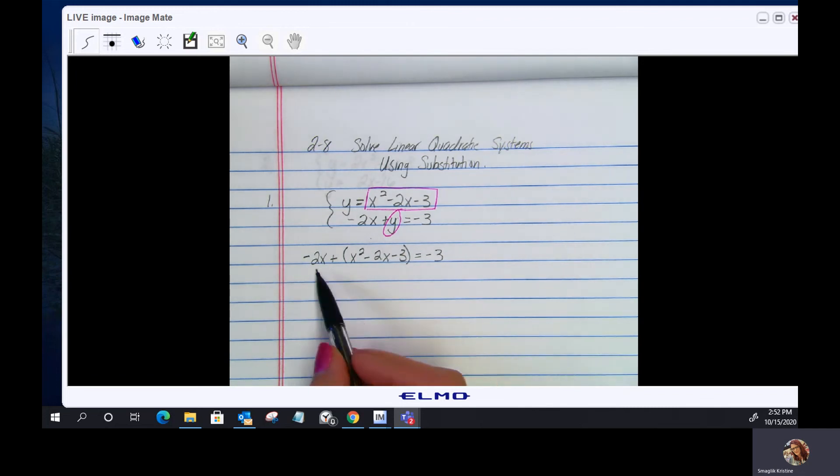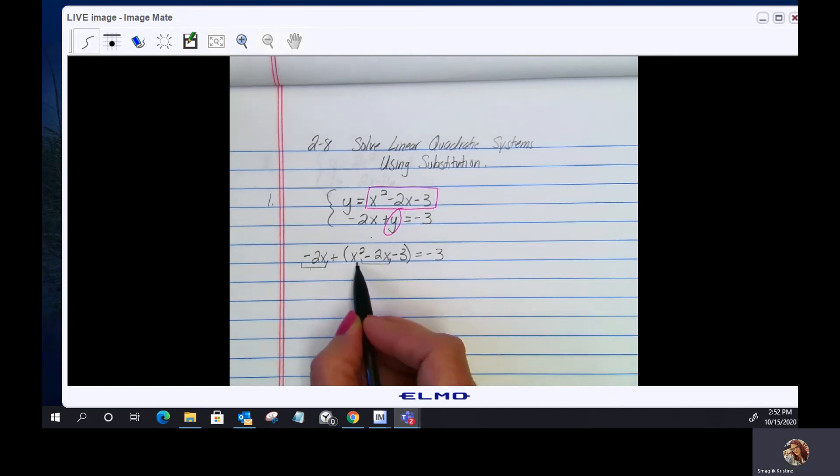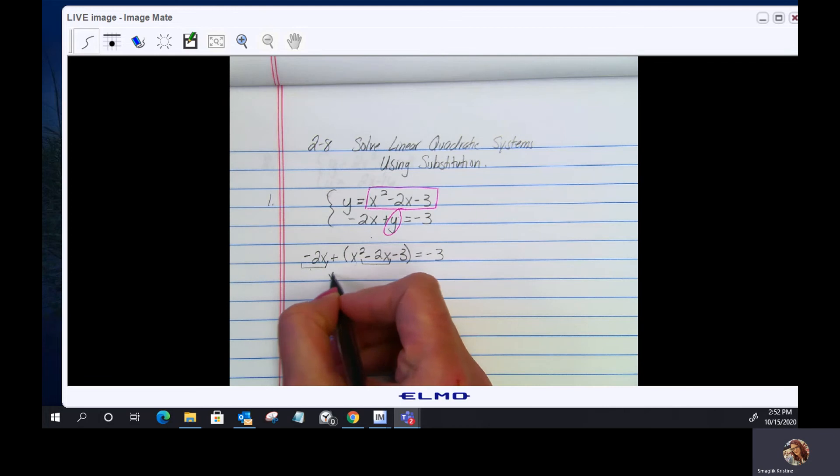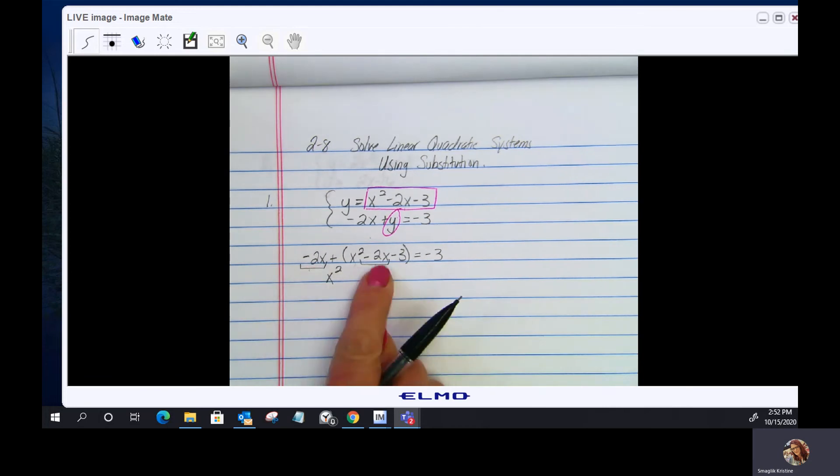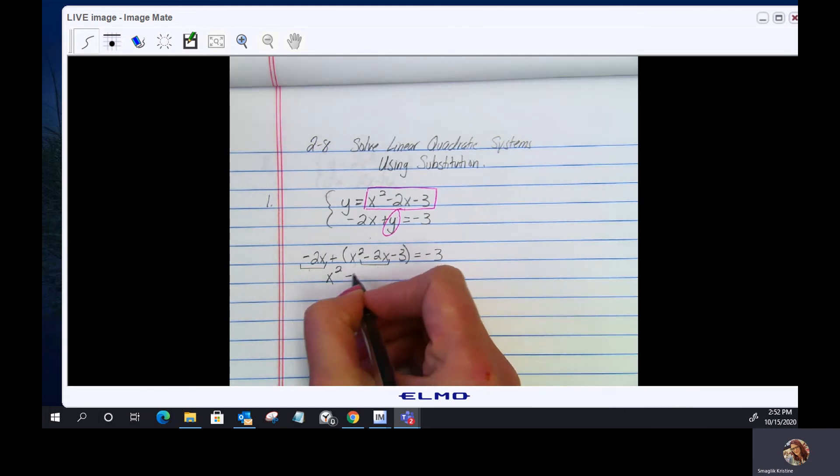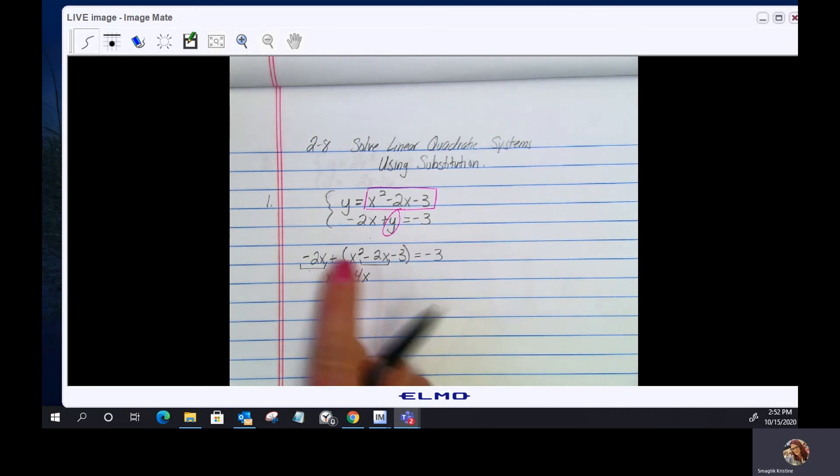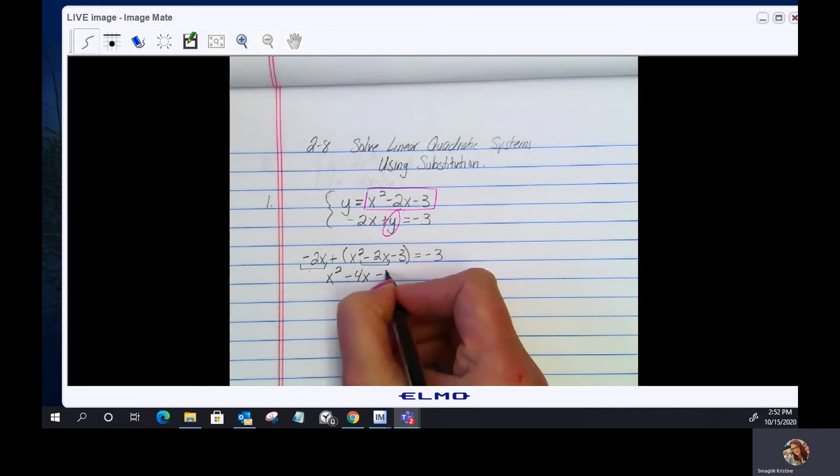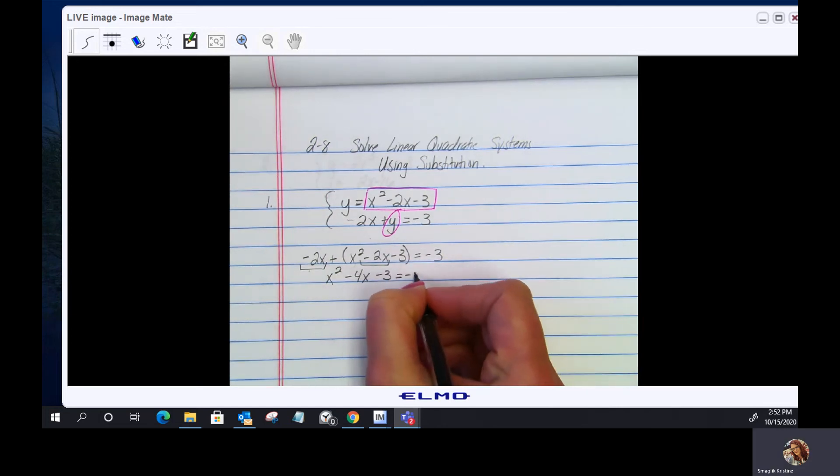I have a negative 2x and a negative 2x, so there's like terms right here. I'm going to move my x squared out front. Minus 2x is a negative 4x minus 3 equals negative 3.